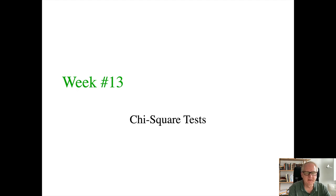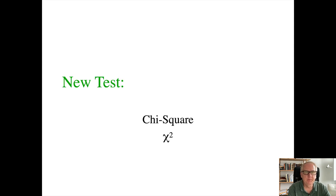Welcome to week number 13 in Psych 1040 here at the University of Queensland. This is the last lecture for this course, and it's covering chi-square tests. The chi-square, as I mentioned in the last lecture, was developed by Pearson, who gave us the Pearson correlation coefficient, and it covers a situation with data that we haven't really covered yet.